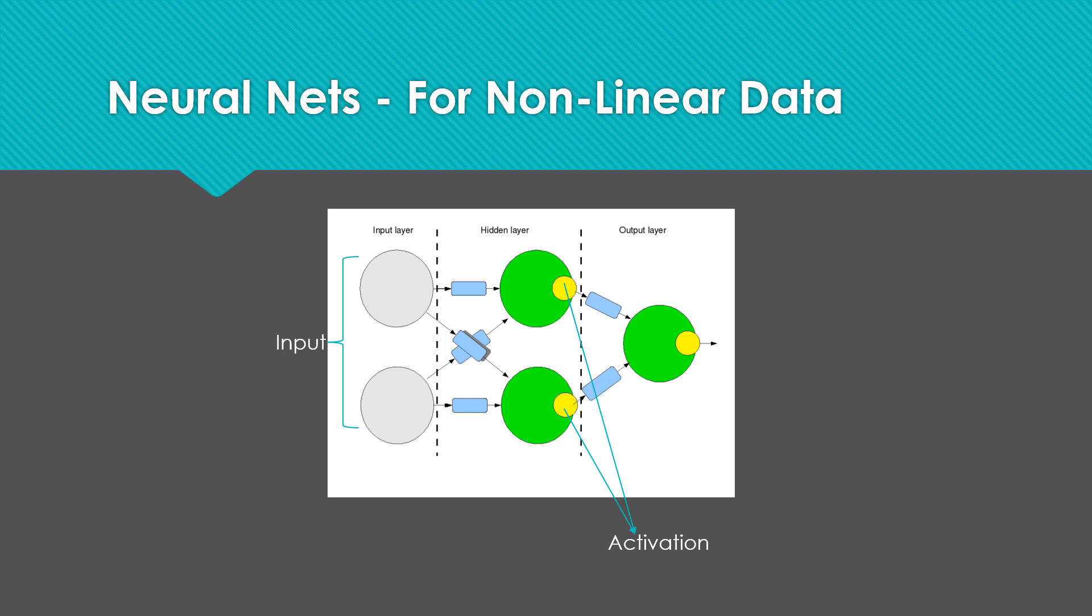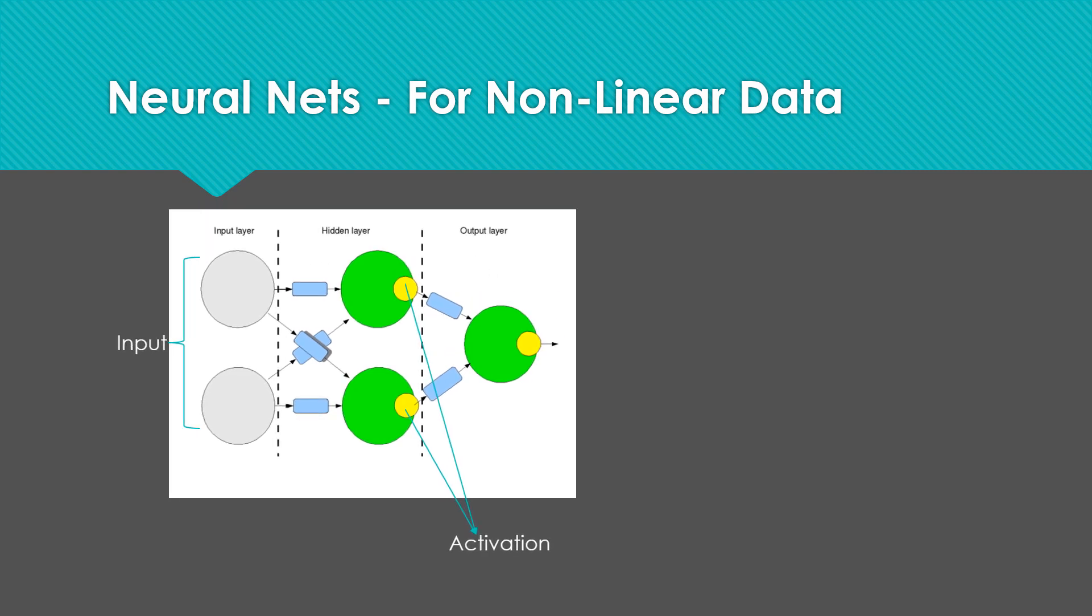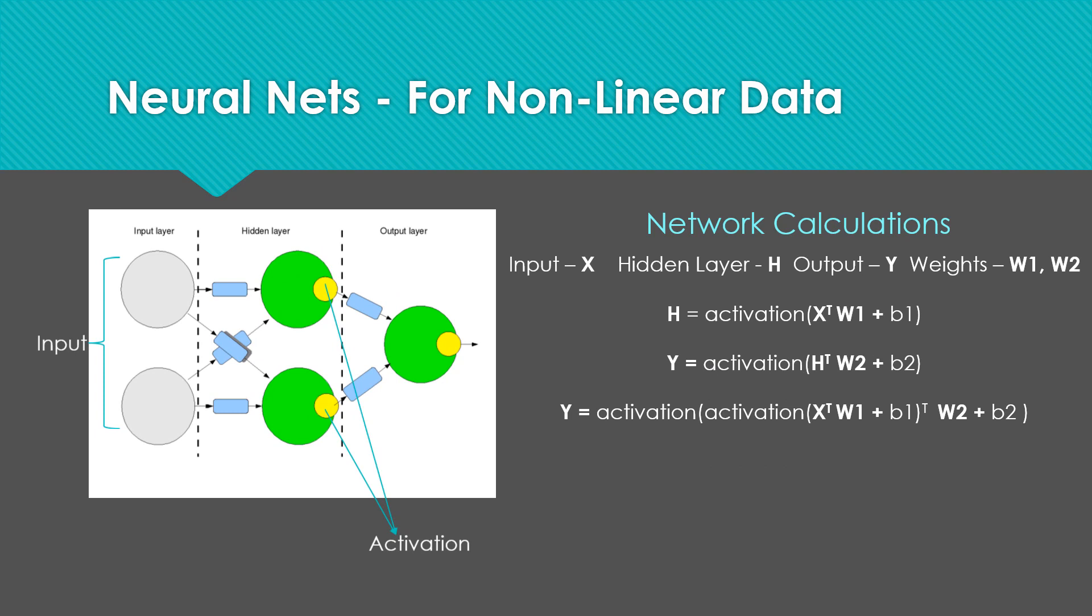So let's look at the calculations involved to predict output using the input. And this process is called forward propagation. So let's assume the input is a vector x, hidden layer is h, the output is y, and weights are w1 and w2. To calculate h, we use the dot product of x and w1, add bias to it, and then activate that. Now that can also be written as the activation of the first hidden layer and add bias to it.